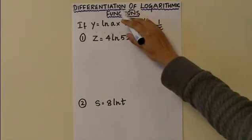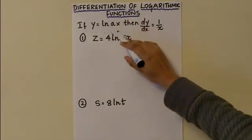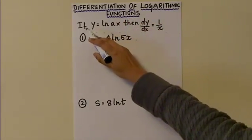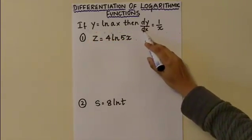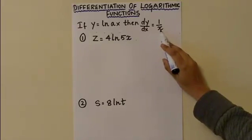This video is about differentiation of logarithmic functions. The formula for differentiating logarithmic functions is: if y equals ln ax, then dy over dx is equal to 1 over x.